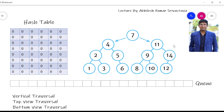In this lecture we will discuss the concept of vertical traversal, top view traversal, and bottom view traversal of a binary tree. You should already have gone through the concept of level order traversal — if not, please go through my previous video. These vertical, top, and bottom view traversals can be found only through level order traversal, so we can say that level order traversal plus a hash table will help us find these three traversal methods.